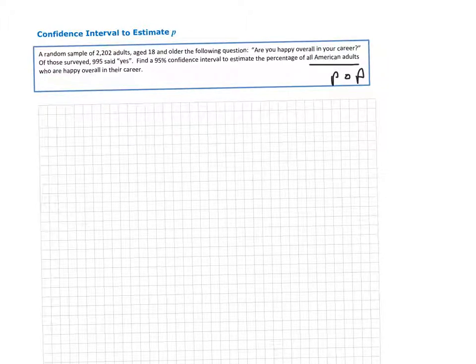You're asking a categorical question - are you happy overall? So people will answer yes or no. We're going to estimate P, the proportion of all adult Americans who are happy overall in their career.